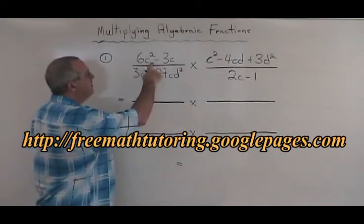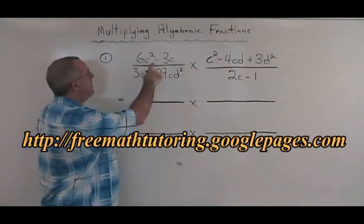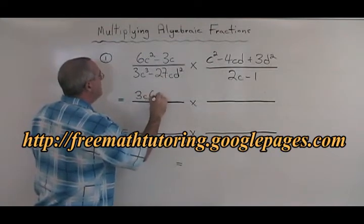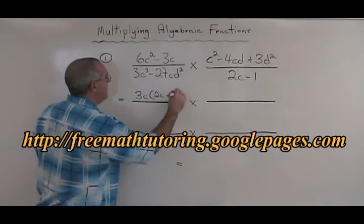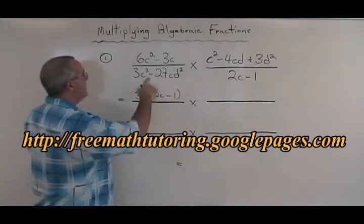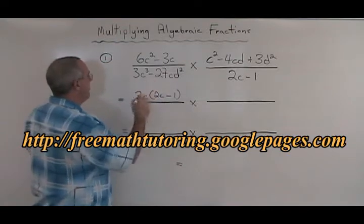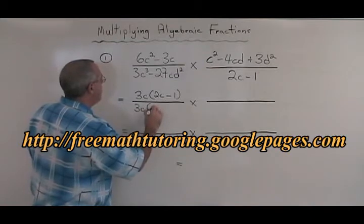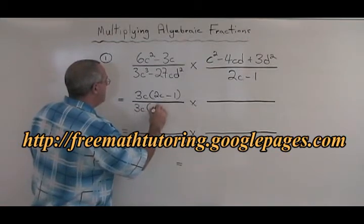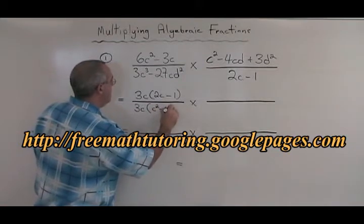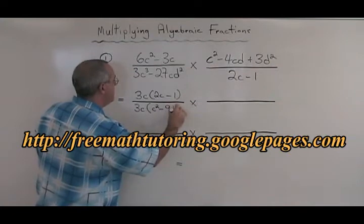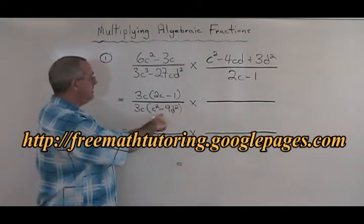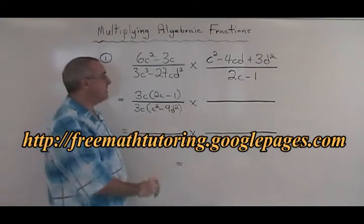The numerator on this side has a common factor of 3c. If we factor it out, we get 2c minus 1. The denominator also has a common factor of 3c. If we factor it out, we get c squared minus 9d squared. This is a difference of squares, so it is still factorable, but we will do that in the next step.